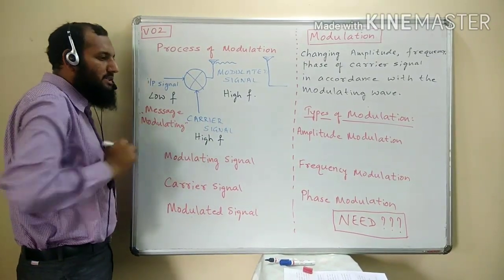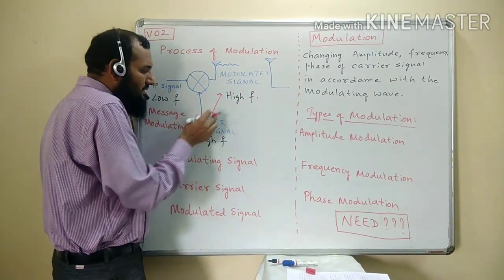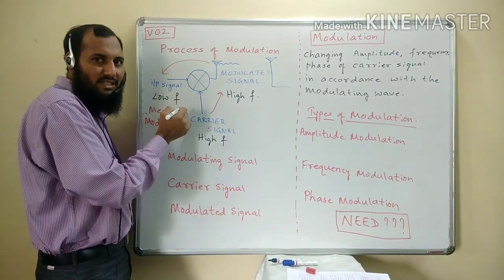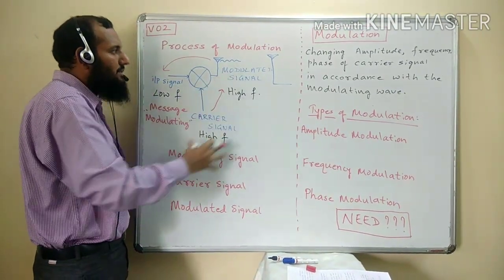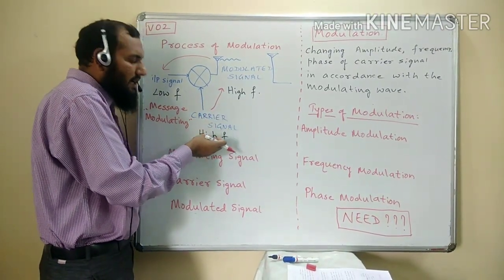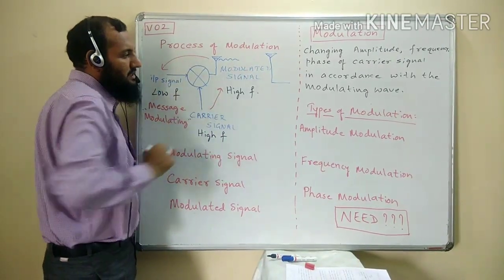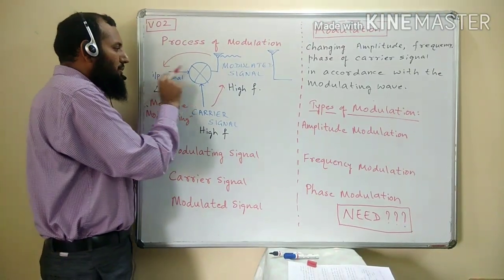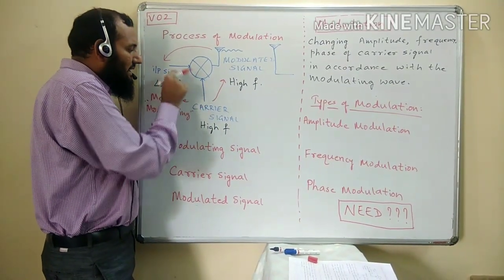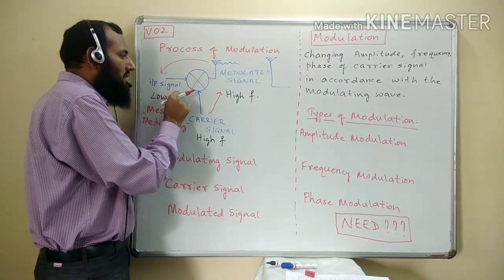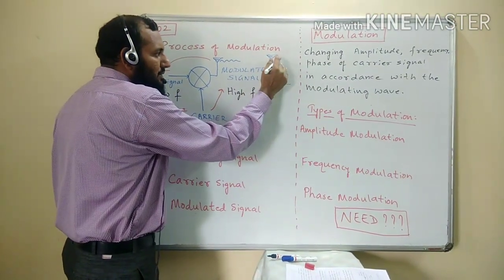The reason why this input signal is called the modulating signal is that the carrier signal is modulated in accordance with the input signal or message signal. So this signal is modulating the carrier signal. In the process of modulation, the carrier signal's characteristic — either amplitude, frequency, or phase — is changed in accordance with the input signal to get the modulated signal. The superposition of carrier signal and input signal is called the modulated signal, which is transmitted through the transmitter antenna and received by the receiver antenna.